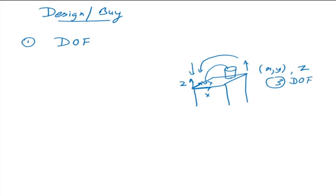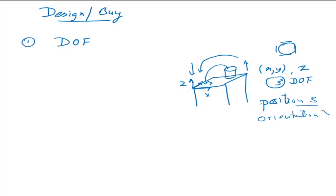To catch this object, since it is symmetrical—a cylinder that from the top looks like a circle—you can catch it with a two-finger gripper in any orientation. So in this case, position requires 3 DOF and orientation is not required, because it is a symmetric object. For a symmetric object, 3 degrees of freedom suffice.